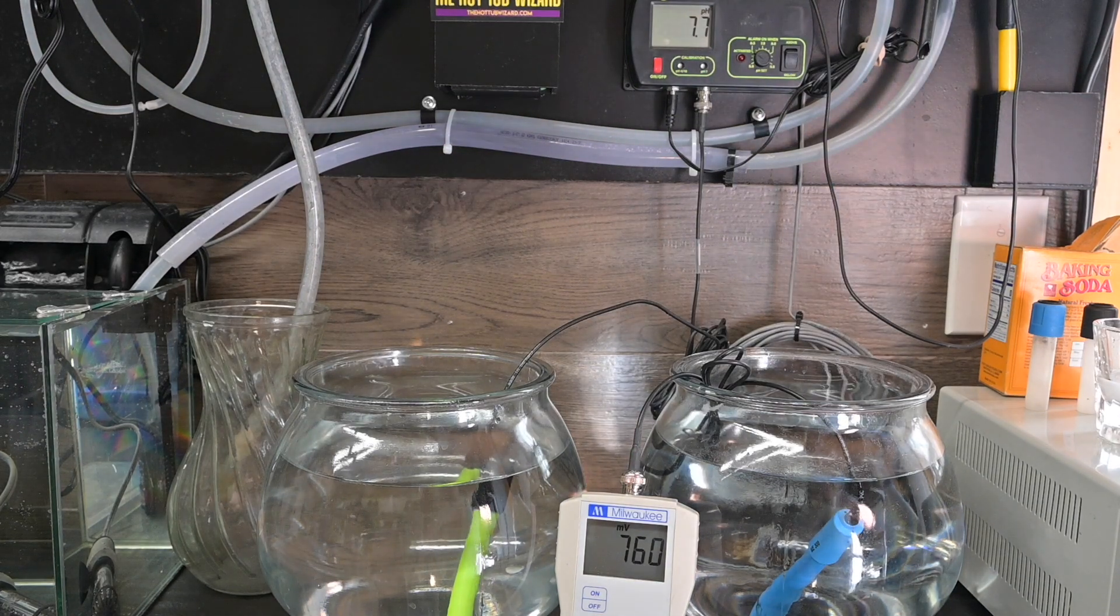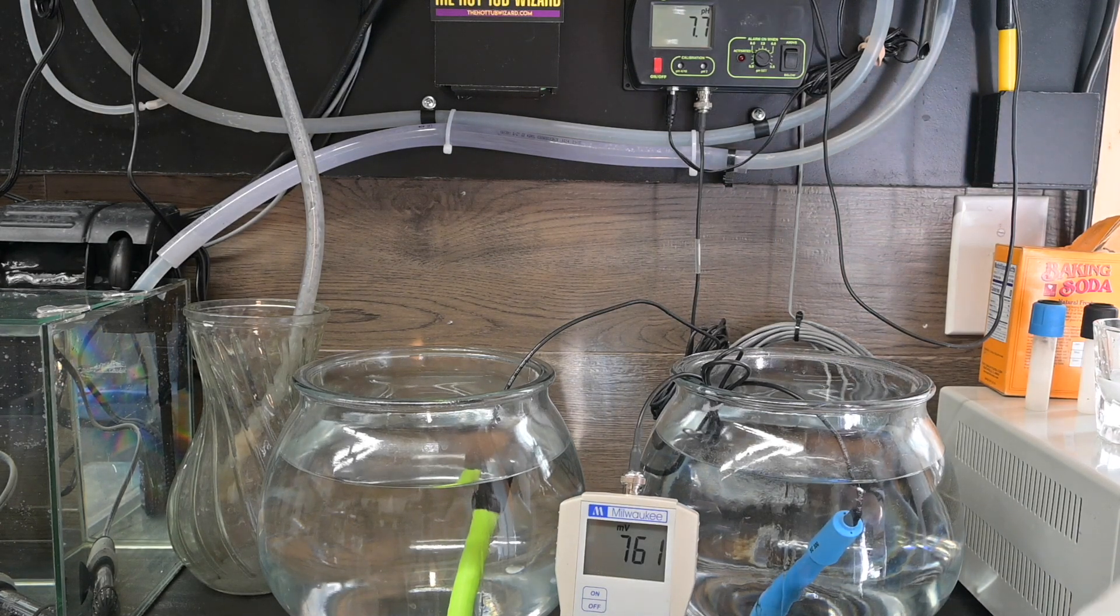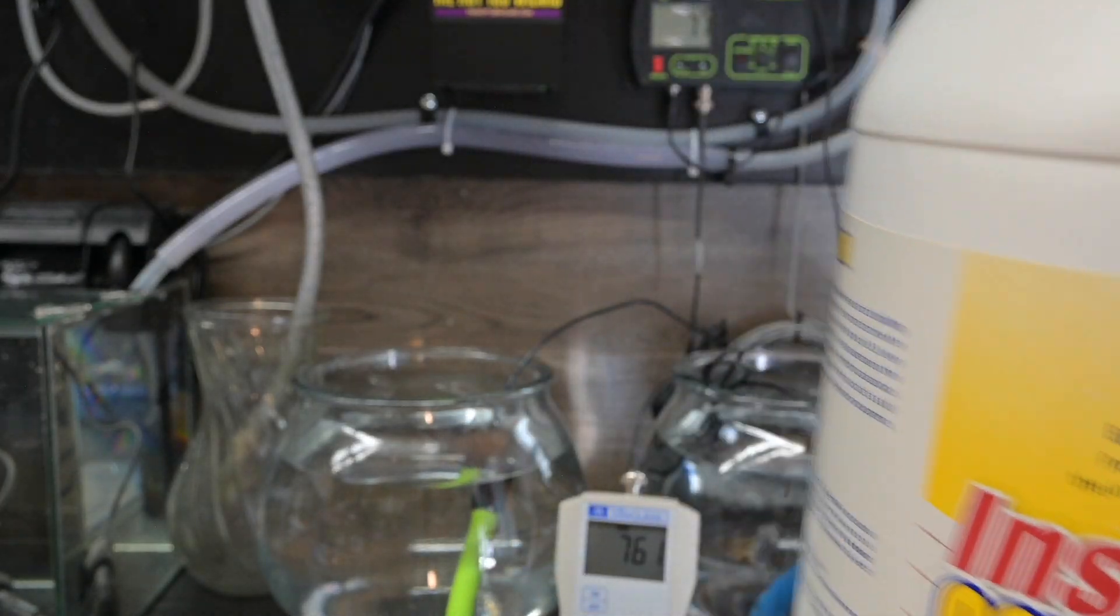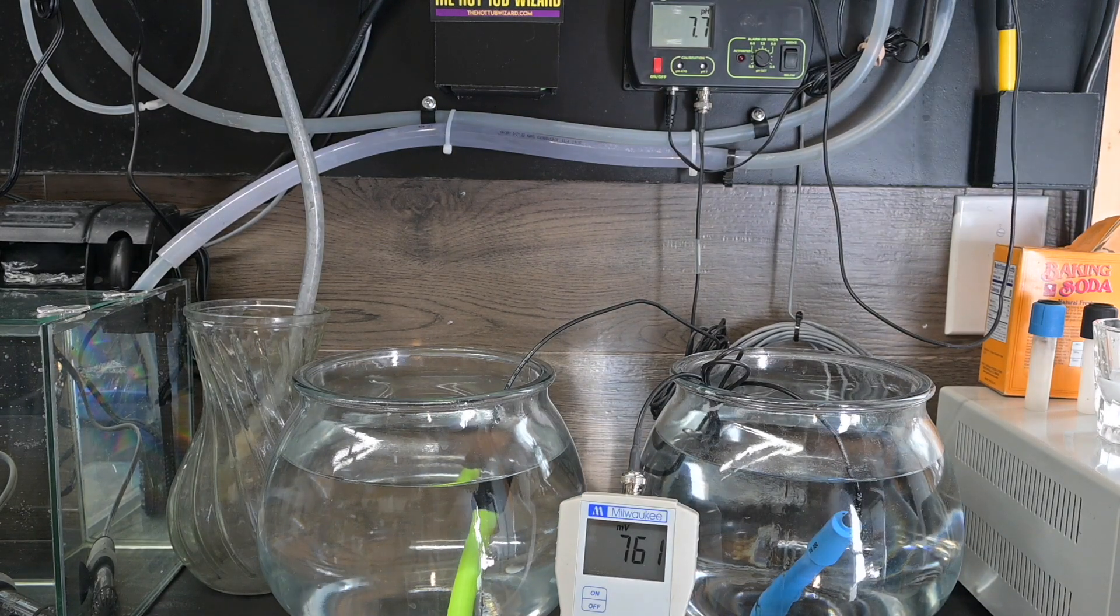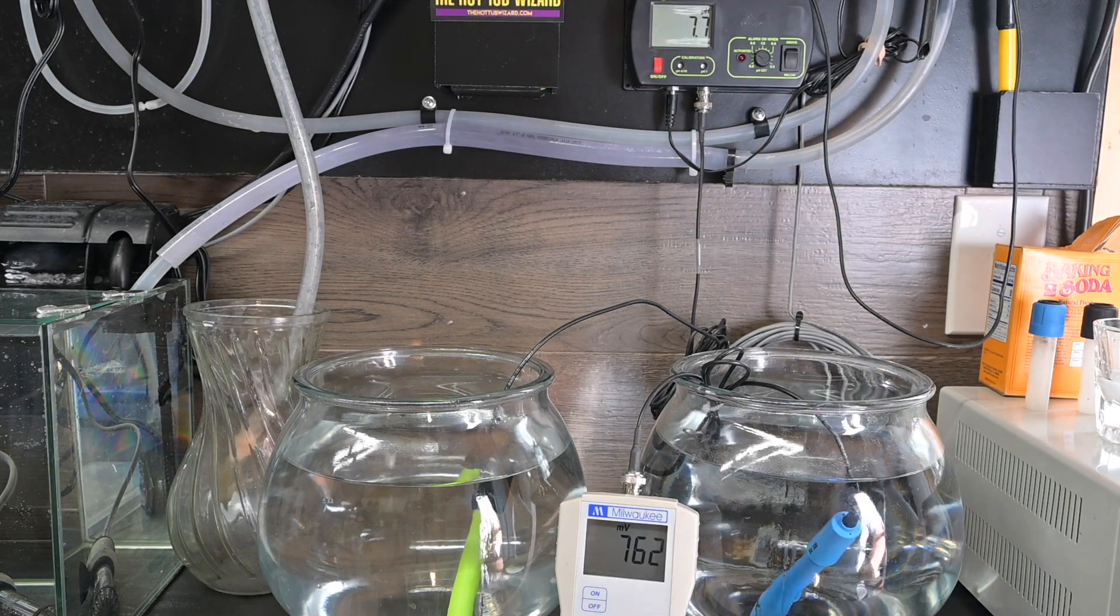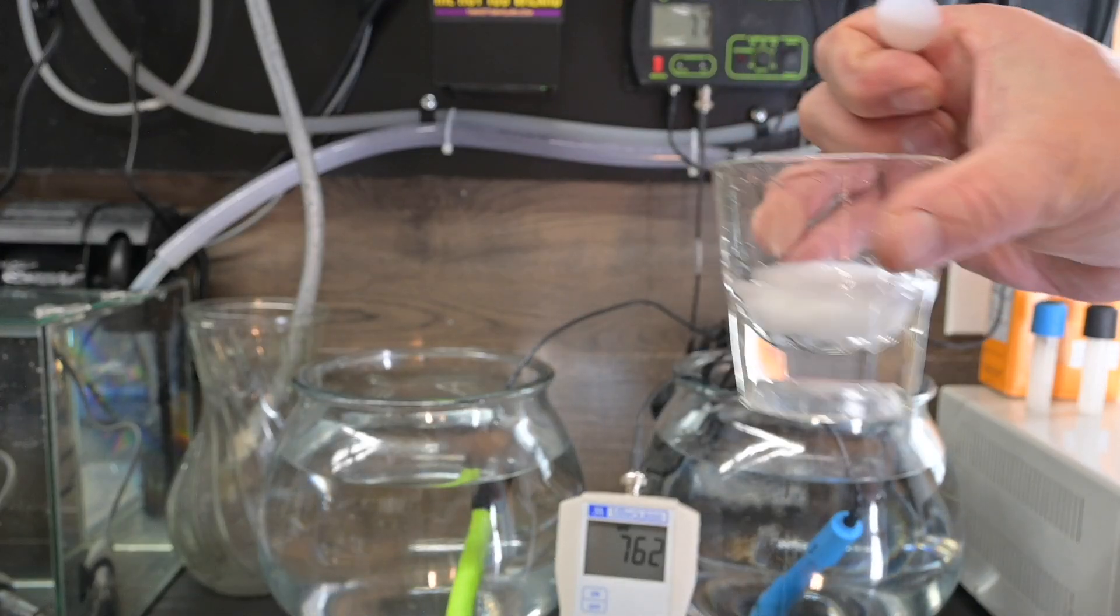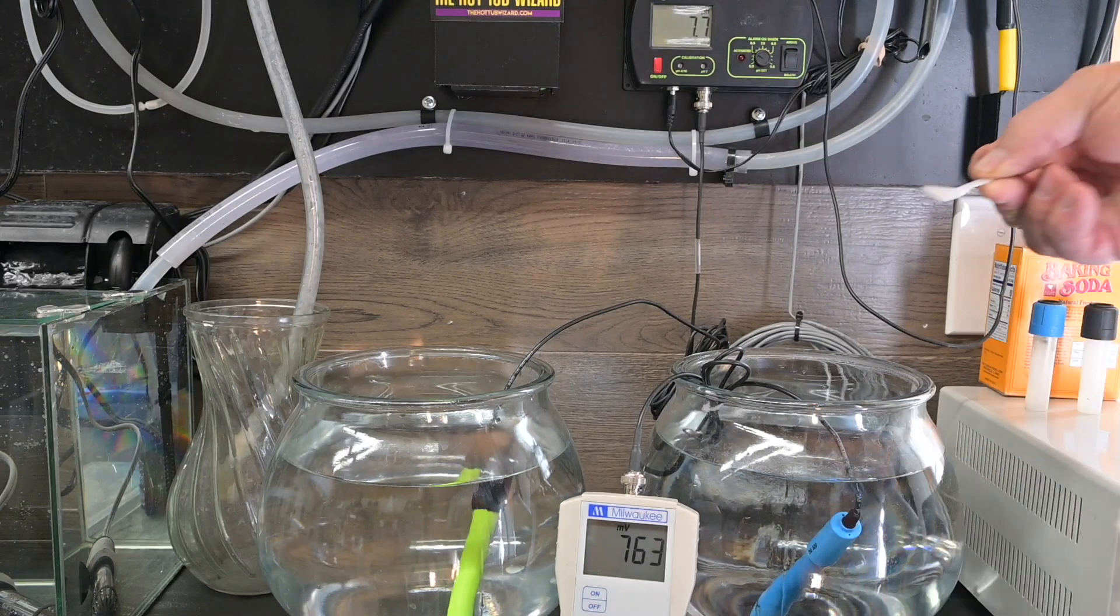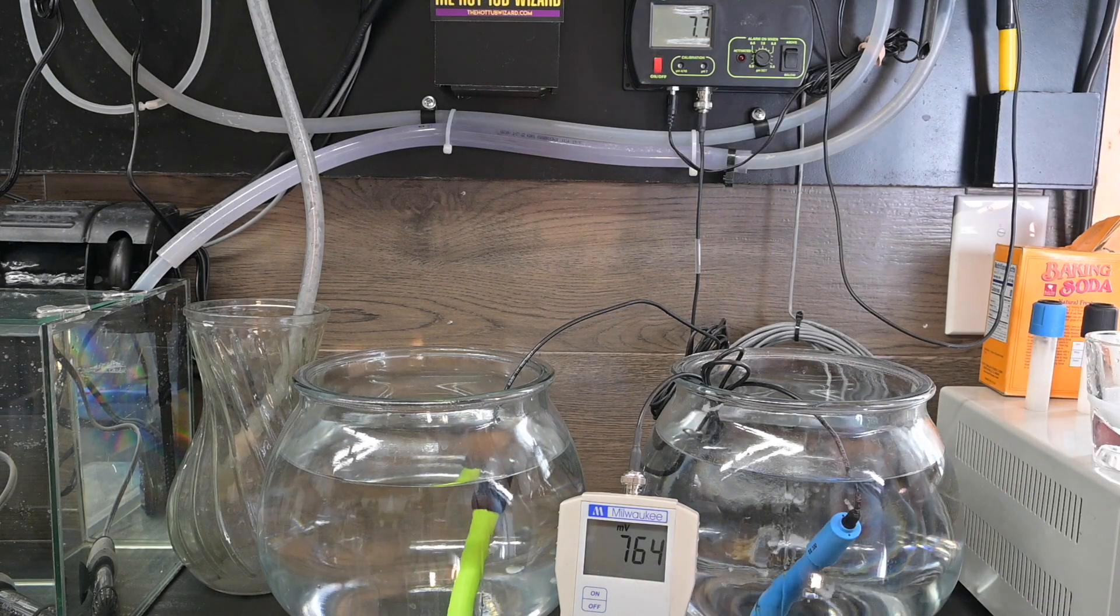In our experiment here, because of our limitations, we're using instant conditioner. Regular conditioner is a granular chemical that takes hours to dissolve, but the instant conditioner does the same thing but instantly dissolves. I put some in this glass and we're going to take one level teaspoon. We're at 764 right now.